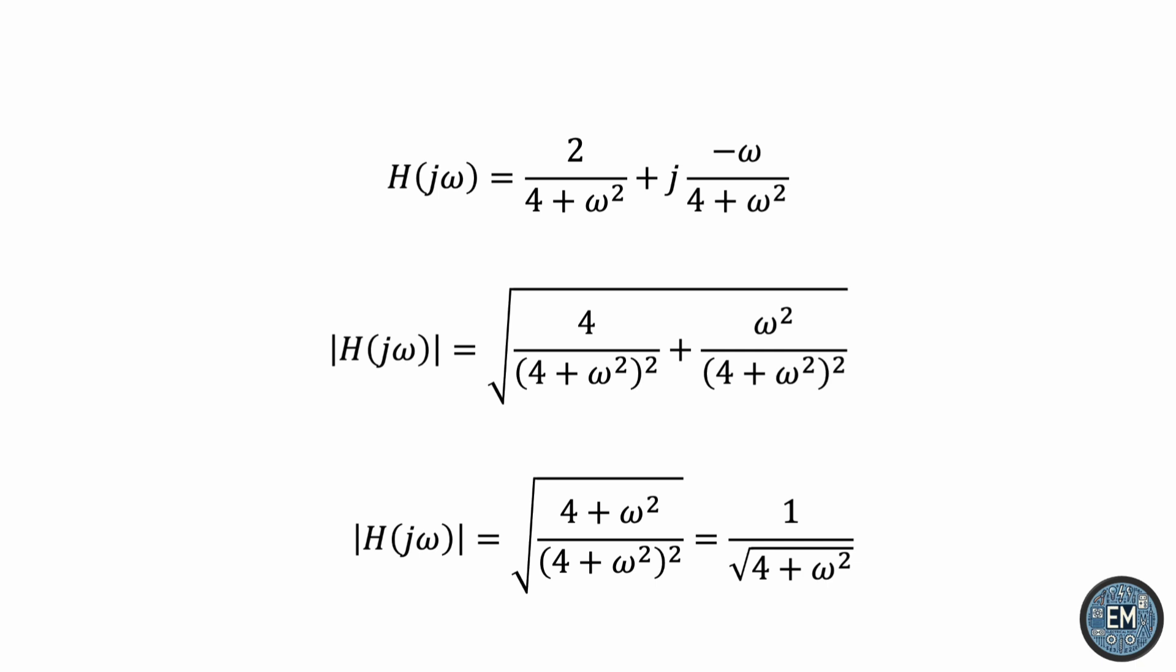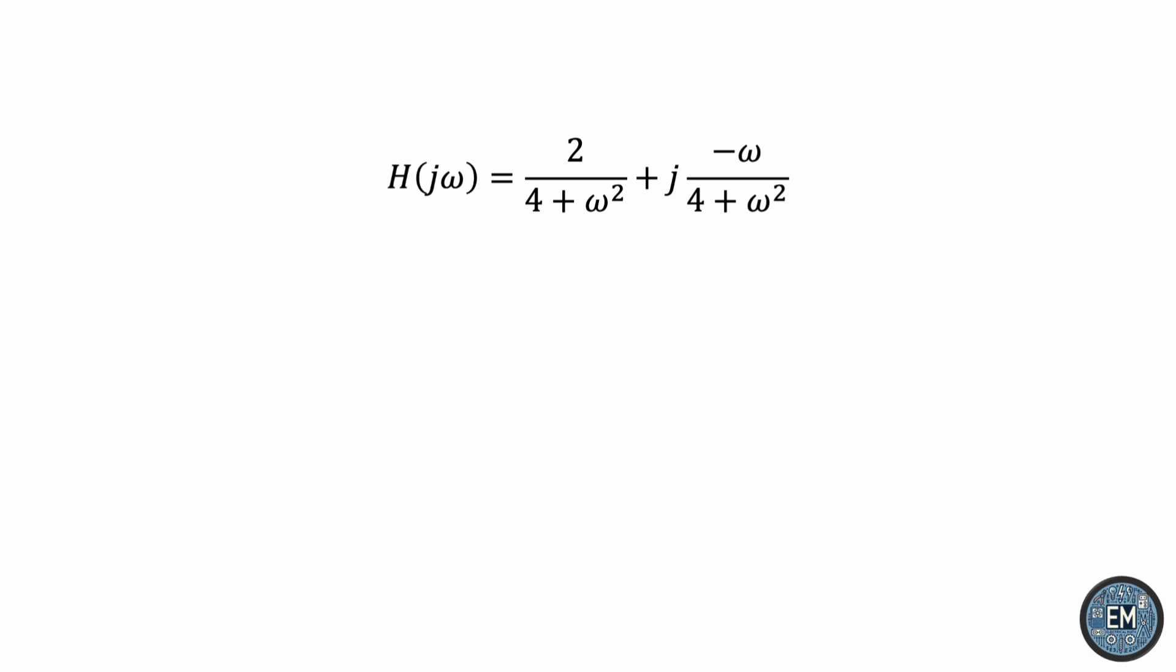Similarly, for the phase, we'll use the formula. We'll have a similar simplification. And then finally, we can use the odd property of the tan inverse function to take the negative sign outside the brackets.